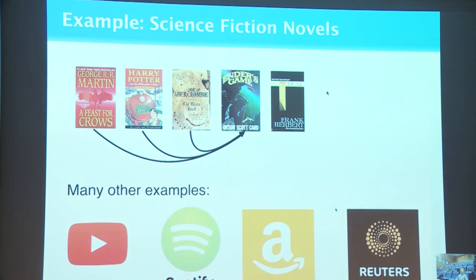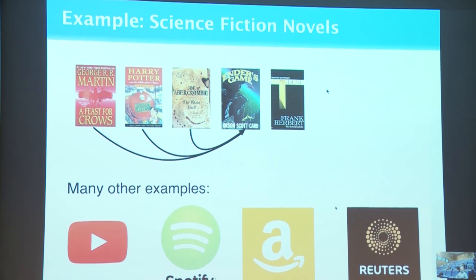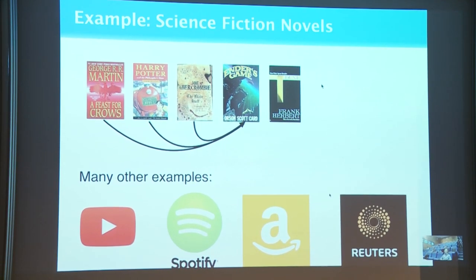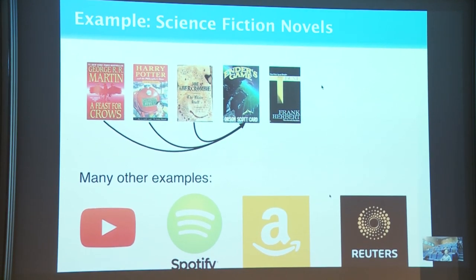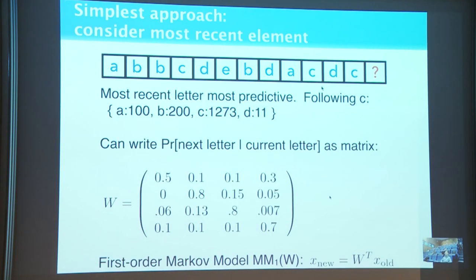This is a classical problem in recommendations. We often augment the representation with other information — features about the user, timing of prior consumptions, how engaged the user seemed, session structure, and so forth. We're going to simplify here and talk about something more stylized that looks just like a simple sequence.